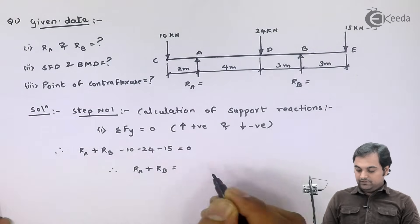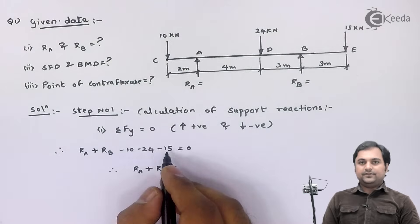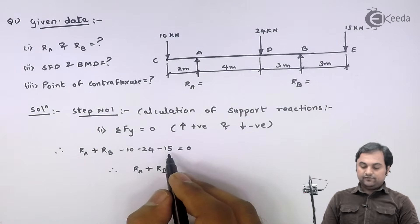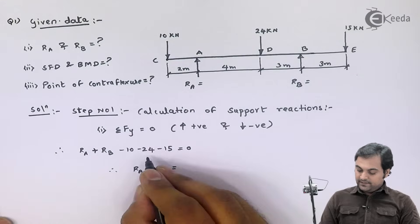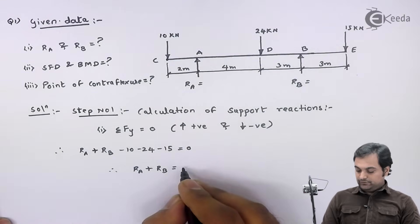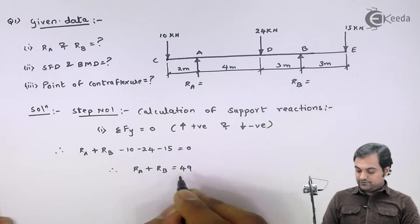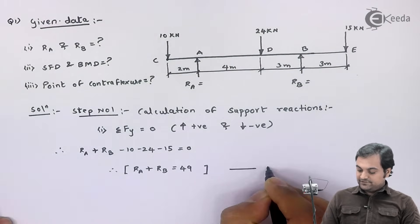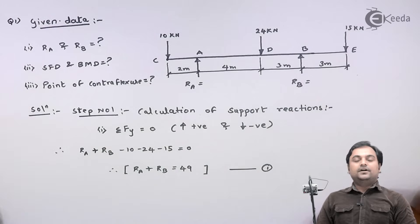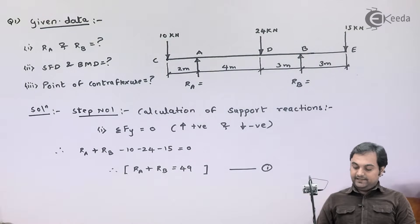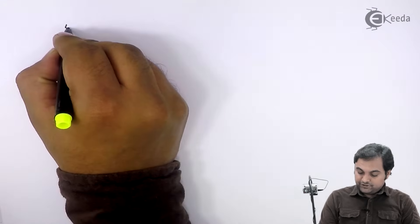Therefore we have RA plus RB is equal to 10 plus 24 plus 15, which is 49. The negative 49 shifts to the other side and becomes positive, giving us our first equation: RA plus RB equals 49.